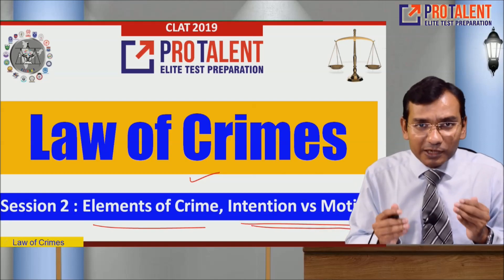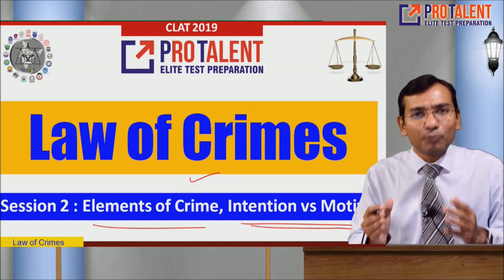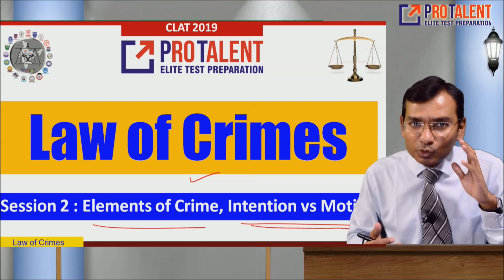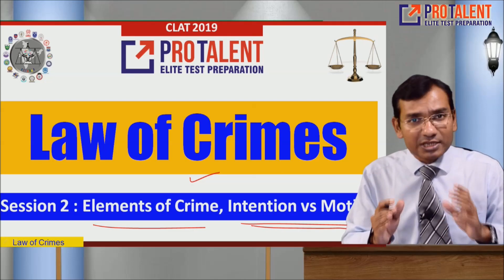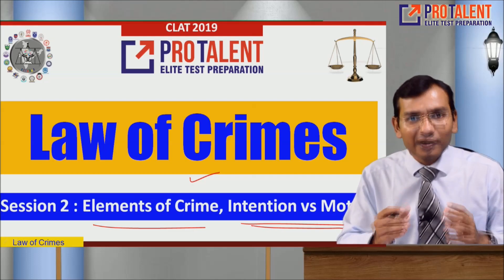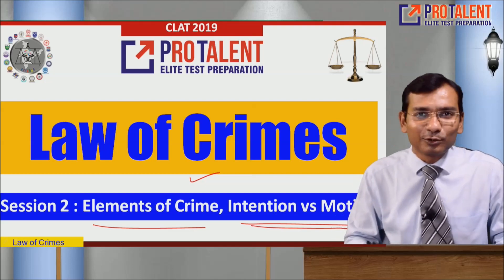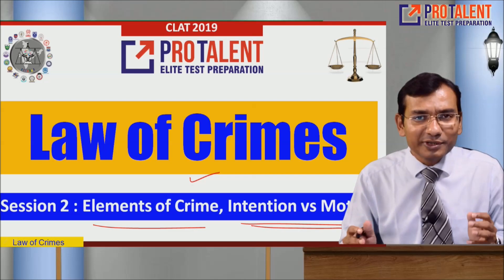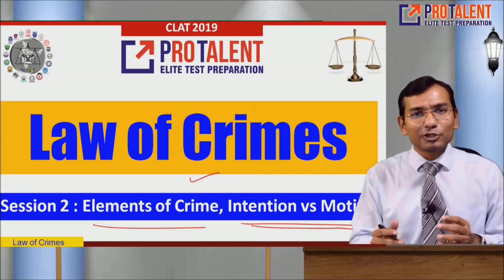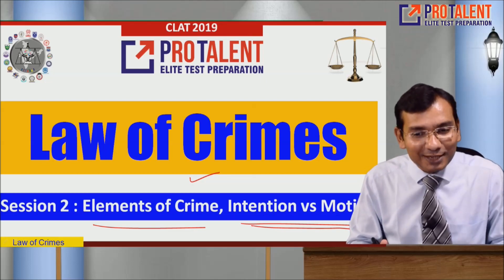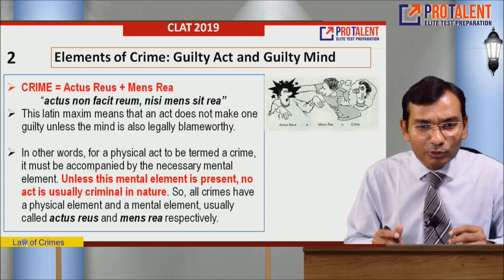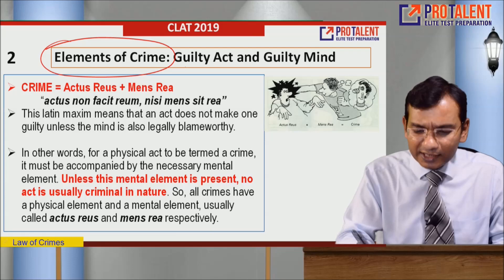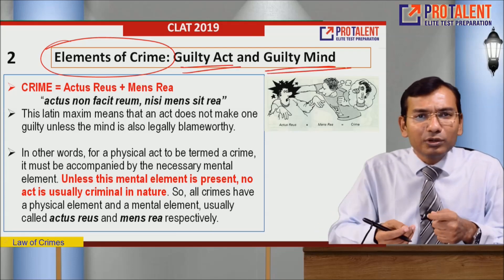Today we don't have questions but a good discussion through which we will try to understand what the elements of crime are - what things are necessary for a crime to occur. This is a conceptual session, so watch it carefully, take notes, and put any questions in the comment section. Law of crimes is a very important backbone for CLAT preparation or any law entrance examination. Elements of crime means the ingredients required for a crime - a guilty act and a guilty mind.